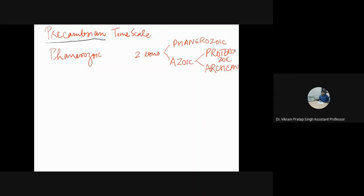So if we say Archean, Proterozoic, and Phanerozoic eons, it would mean the same thing. The Archean eon spans from around 4 billion years to 2.5 billion years. We all know that the origin of the Earth was 4.5 billion years ago, but the time period from 4.5 to 4 billion years is called the hidden time, as the rock record does not exist for that. So the Archean eon is from 4 to 2.5 billion years.